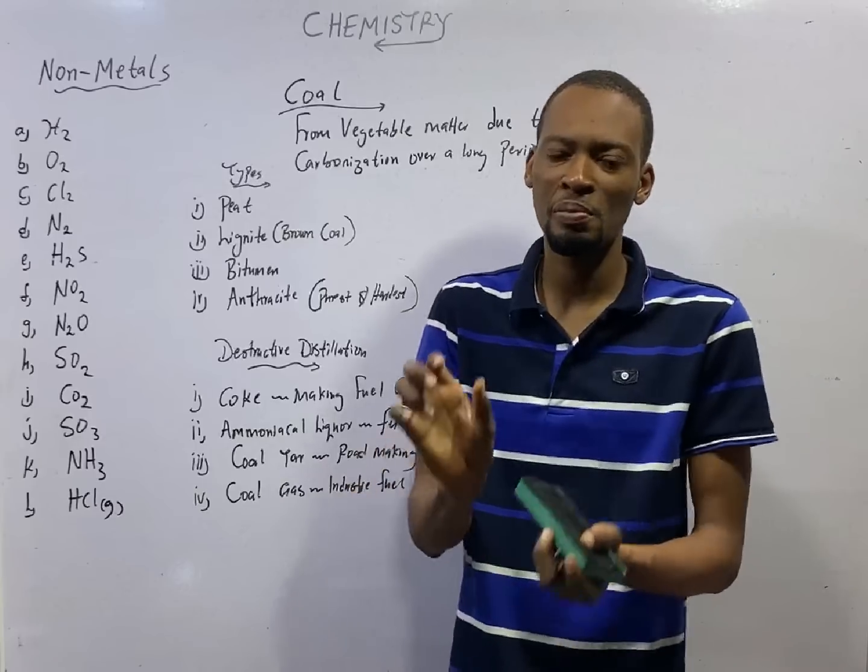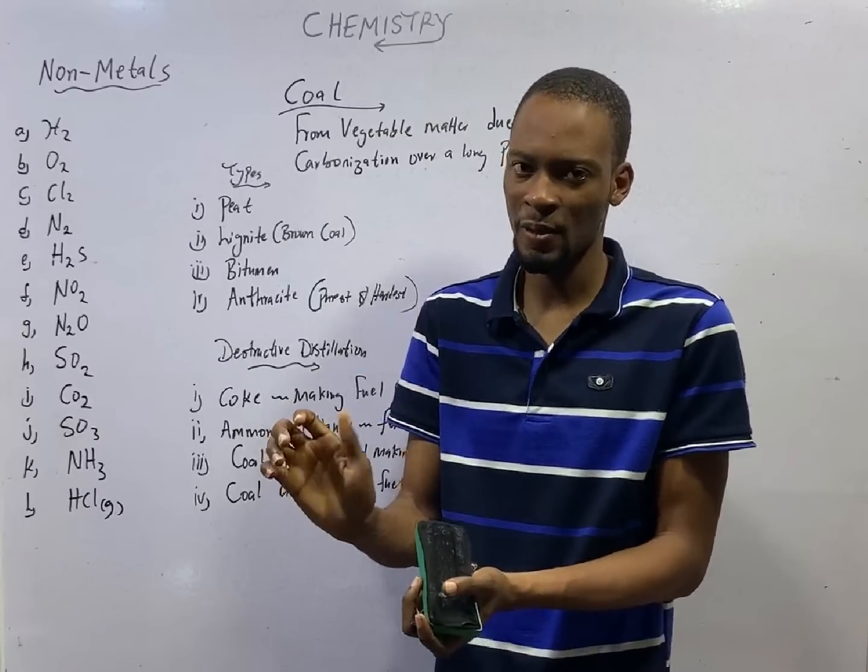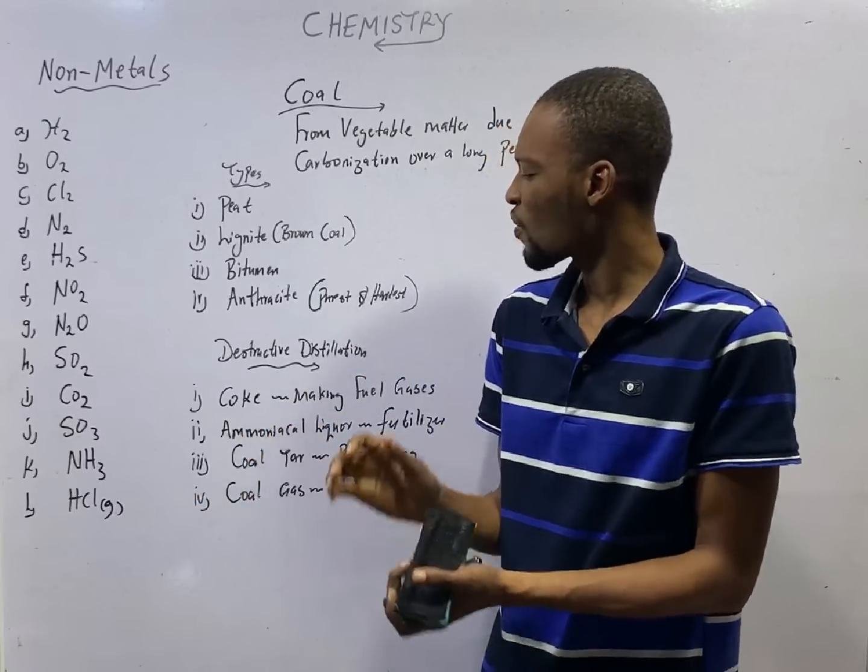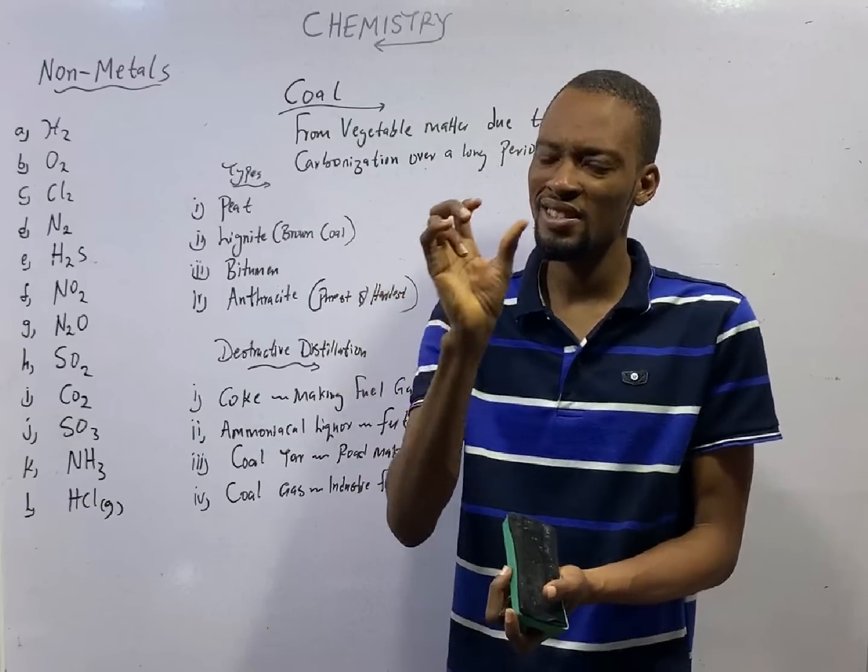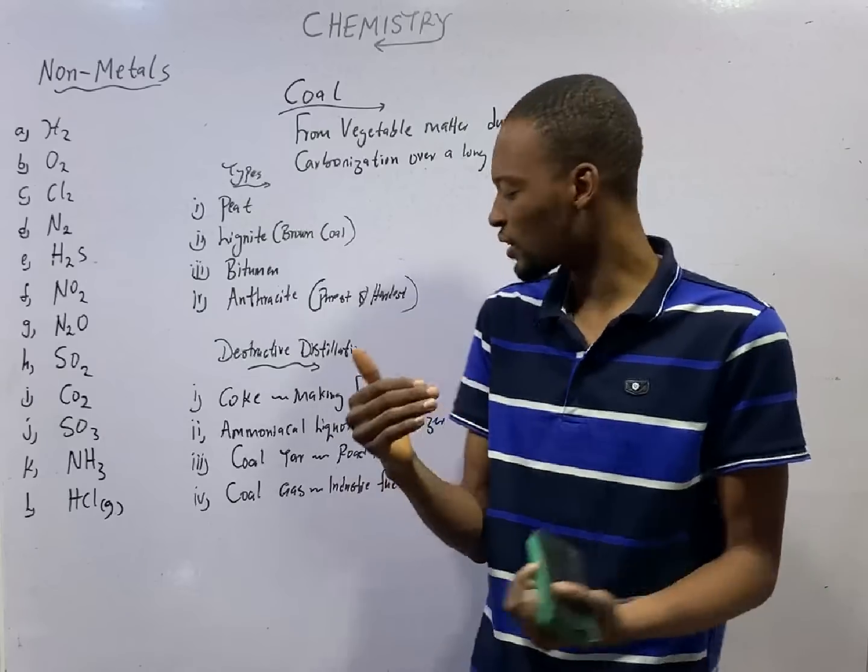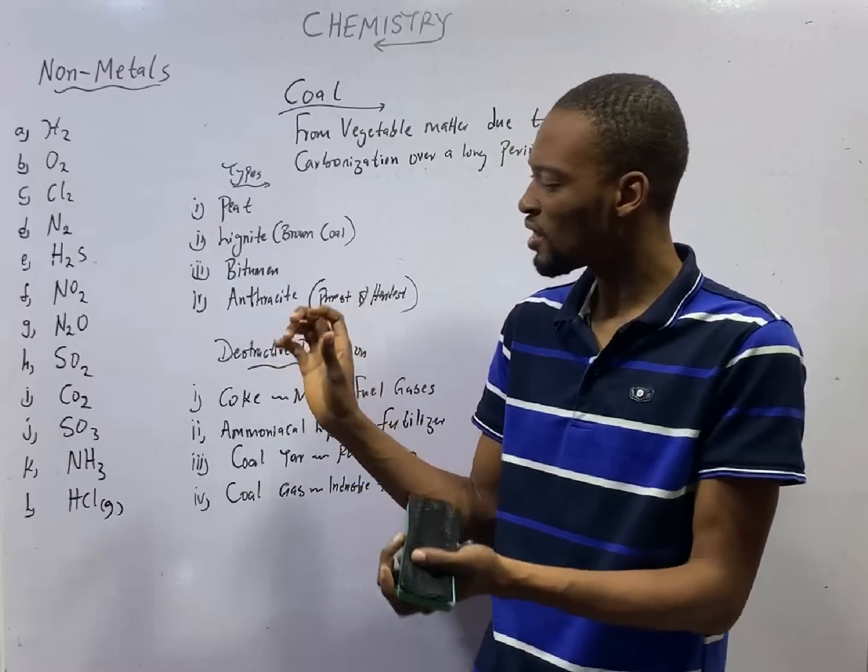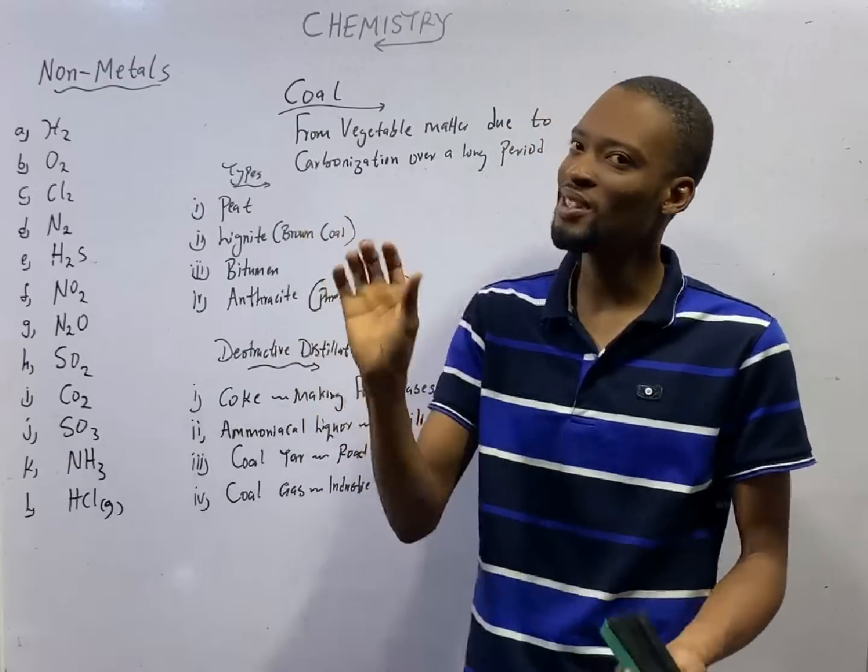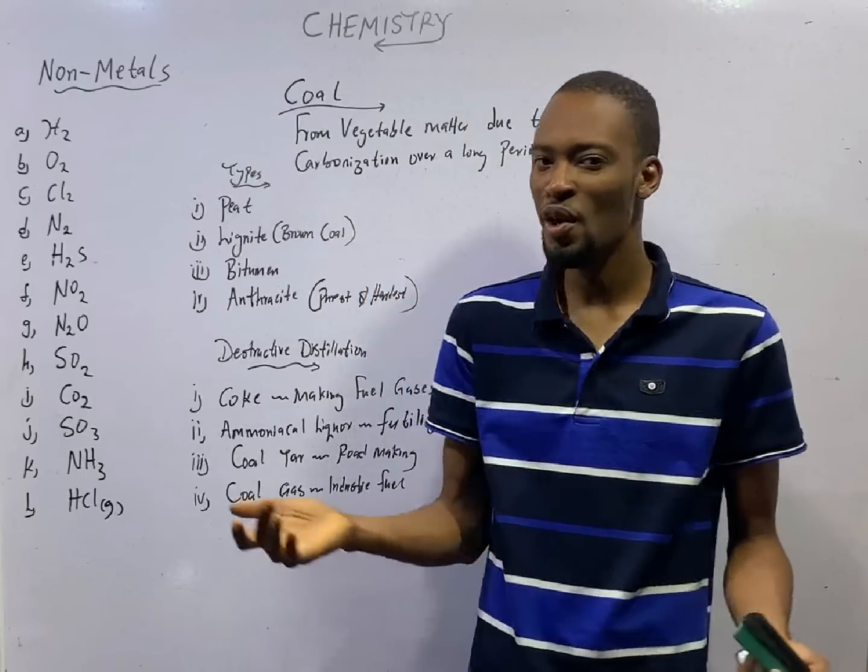It finds application in making of fertilizers. The third product of destructive distillation of coal is Coal-tar. The Coal-tar you see for making road is a product of destructive distillation of coal.